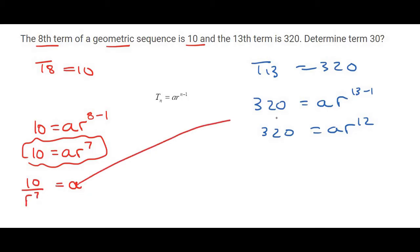I would then plug that into the place of A over here. And so this means we're going to have 320 equals 10 over R7 multiplied by R12. Now, some students do struggle a little bit here. R12 is the same as R12 over 1. So just multiply these two parts together. So that will be 320 is equal to 10 R12 over R7.